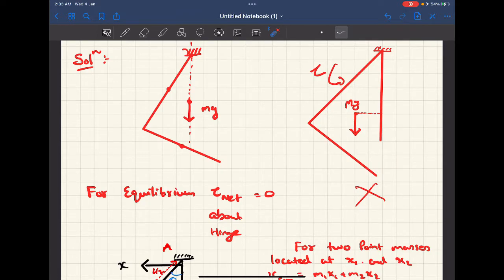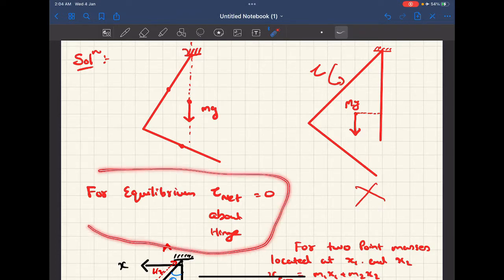For the system to be in equilibrium, the torque about this hinge has to be zero, which means the mg must pass through this vertical line. So after understanding that part, this question is just about making a decent diagram.